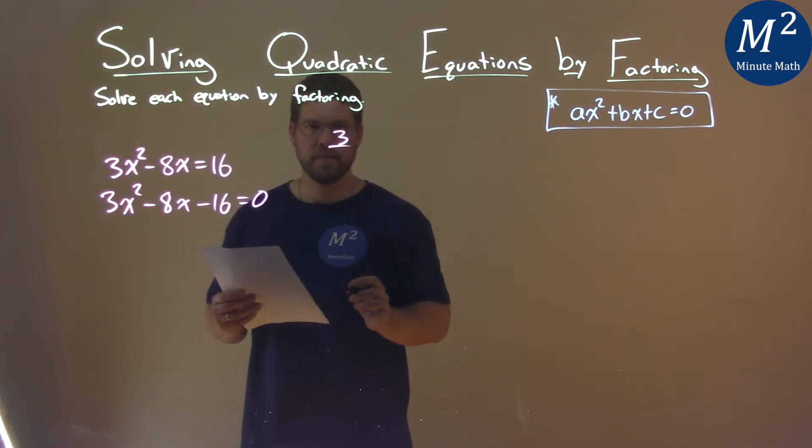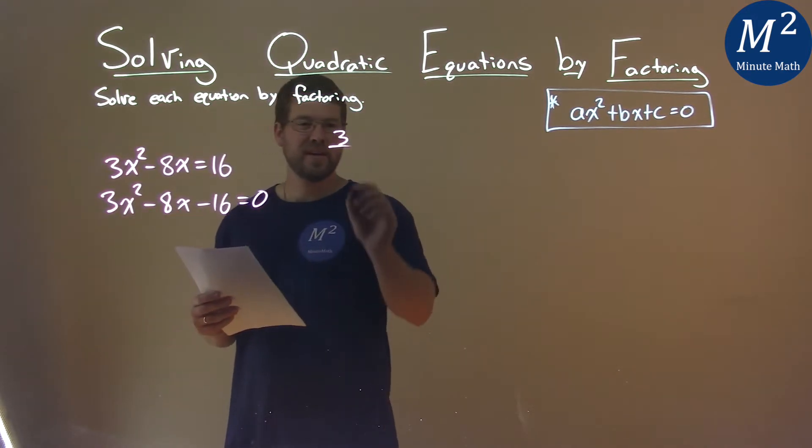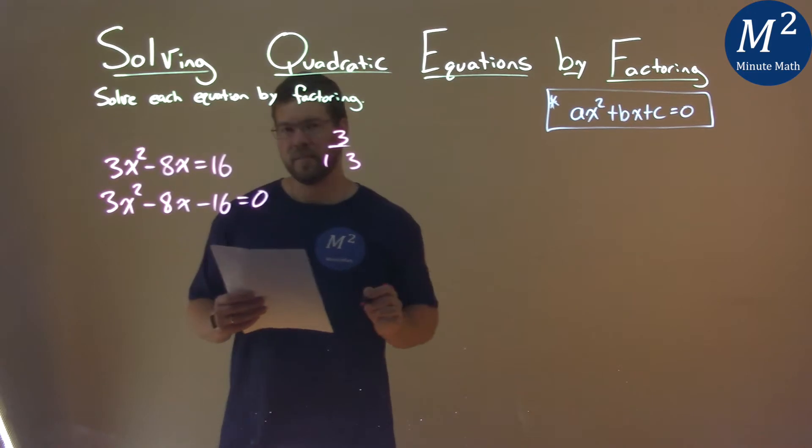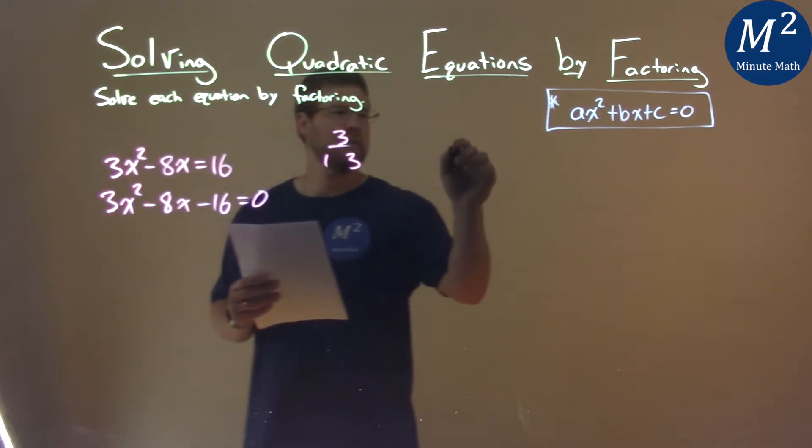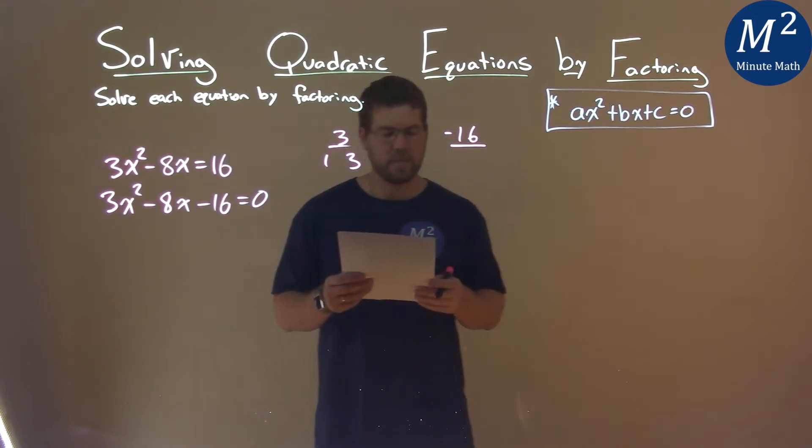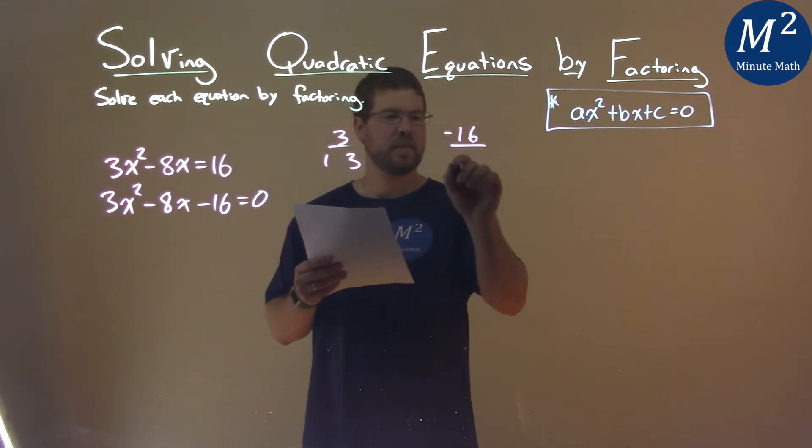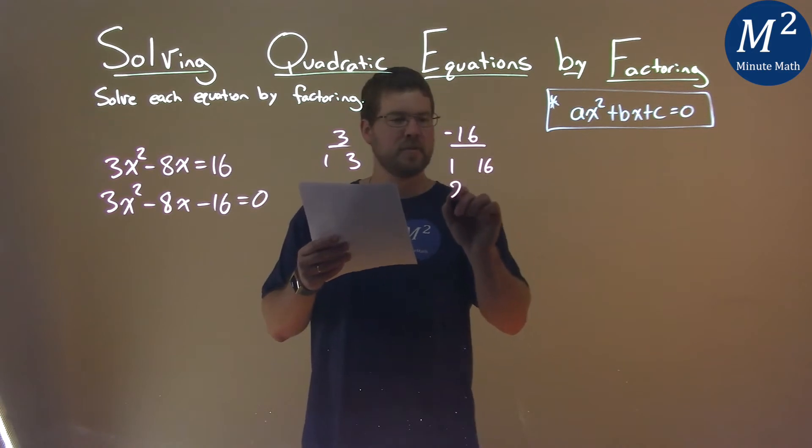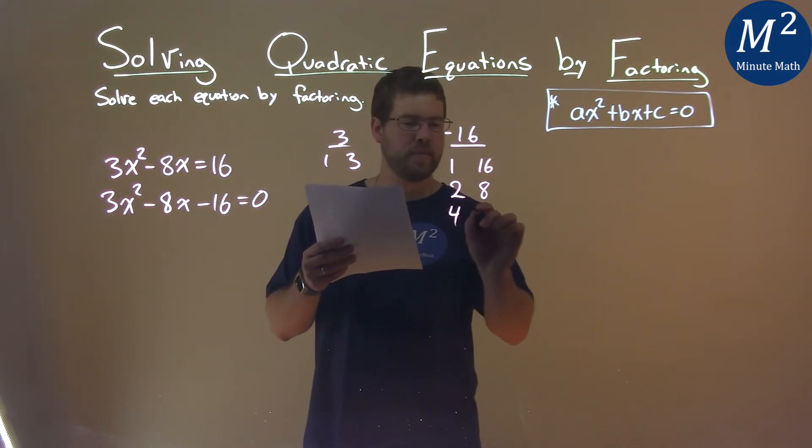My a value is 3. What's the numbers multiplied by 3? Well, that's 1 and 3. I look at my c value being 16, and let's go list the numbers that multiply, or it's negative 16. Let's find the numbers that multiply to be positive 16. That's 1 and 16, 2 and 8, and 4 and 4.